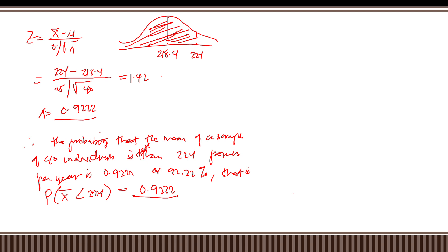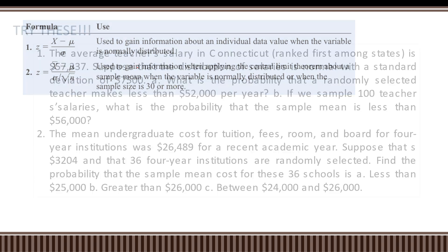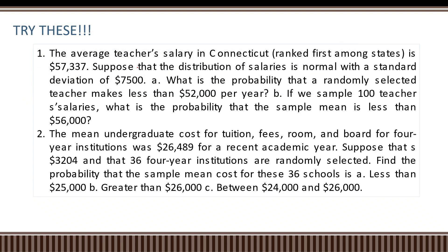To summarize: use the individual z-formula when gaining information about individual data. Use the central limit theorem formula for the sample mean when the variable is normally distributed or when the sample size is 30 or more. Thank you for listening. This has been all about the central limit theorem problems.